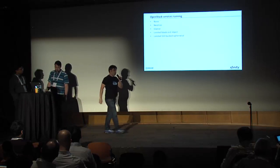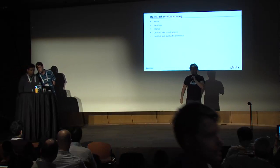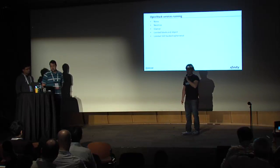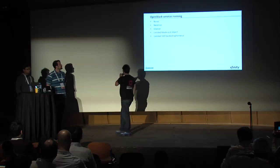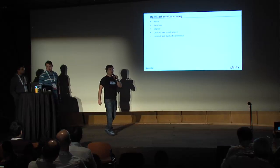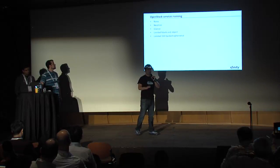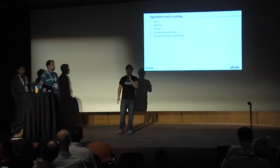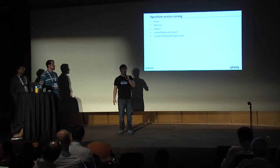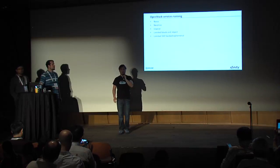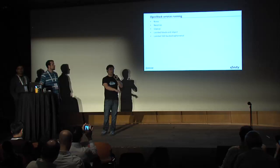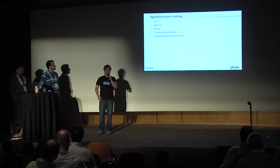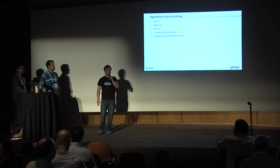Our regional data centers run all of the Nova components within the data center, the Neutron controller and agents for each compute node. We also run Glance locally for each regional data center, and we have limited block and object storage — within each regional data center there is a Ceph cluster that provides both block and object storage. There is no replication across regional data centers or a global namespace. The failure domain is just within that regional data center, so it is left up to the application to replicate objects based on their storage requirements.